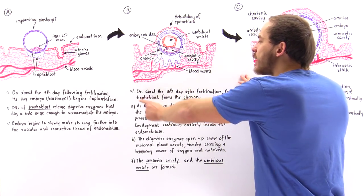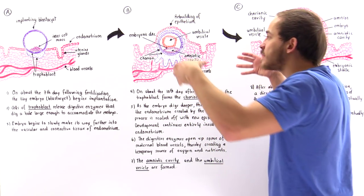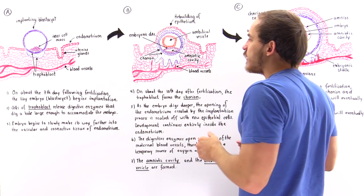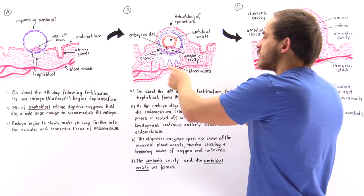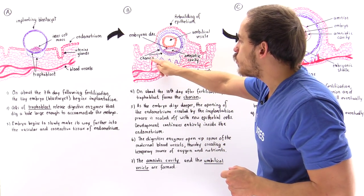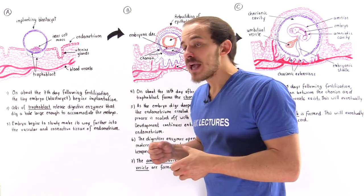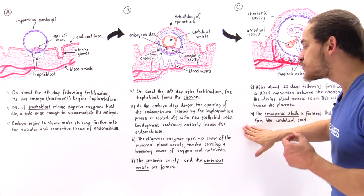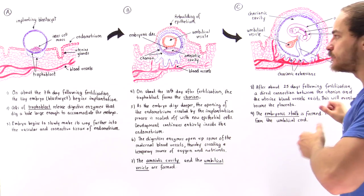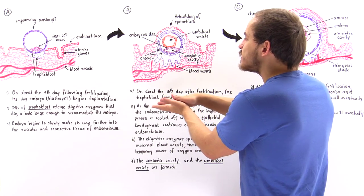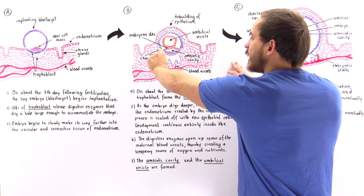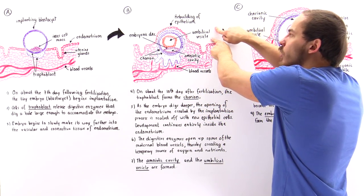By about the tenth day, the entire implanting embryo is found entirely inside the endometrium. These cells continue to secrete digestive enzymes that further break down the area surrounding the implanting embryo. Because these digestive enzymes come in close proximity with the blood vessels, the blood vessels are also broken down, creating a temporary source of nutrition — oxygen and nutrients such as glucose. This eventually develops into the placenta, and the trophoblast region in contact with these blood vessels is what eventually forms the chorion.